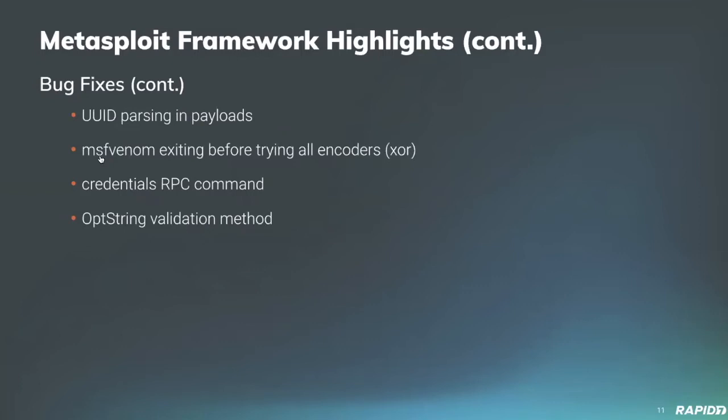There's a fix for an issue with UID parsing for payloads using UIDs. Community contributor Fra fixed an issue with the XOR dynamic encoder so it will raise a more appropriate exception when there is a bad character issue while encoding a payload — fixing some MSFvenom behavior people were reporting. Community contributor Phoenix H fixed an error in the credentials RPC command to avoid a null object dereference. Phoenix H also fixed some minor bugs in the autoroute and web delivery modules. Christophe De La Fuente added a fix to ensure the ops strings valid method works as expected.